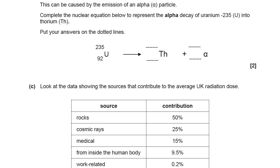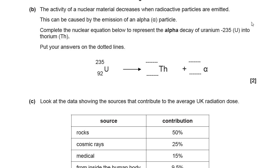The next part of this question then, part B. The activity of a nuclear material decreases when radioactive particles are emitted. So this is an incidence of radiation, a decay. This can be caused by the emission of an alpha particle. Complete the nuclear equation below to represent alpha decay of uranium-235 into thorium. And it tells you uranium is represented by the U. So that's the uranium over there. And thorium is represented by the TH. That's the thorium there. This is the alpha particle here. You do need to remember what an alpha particle is made up of and the notation for that.